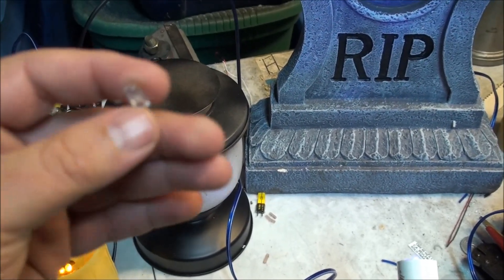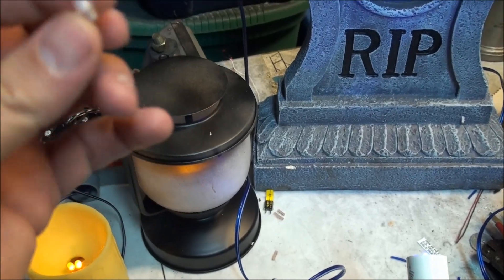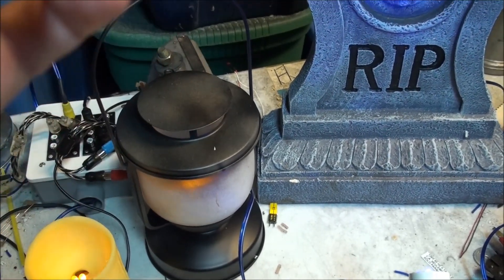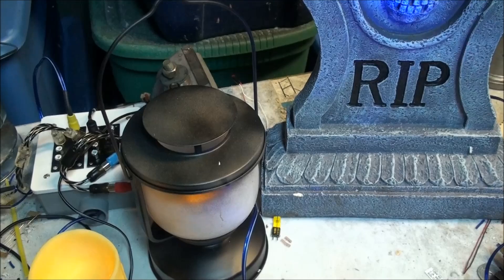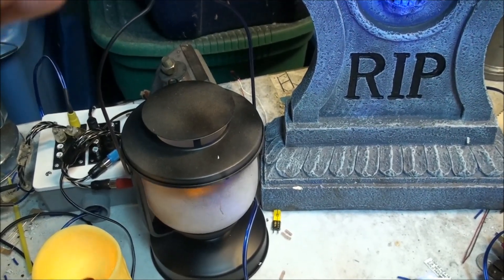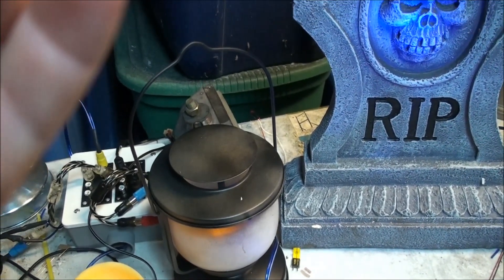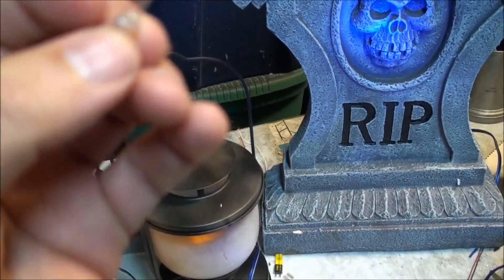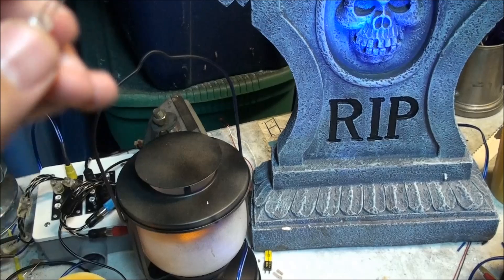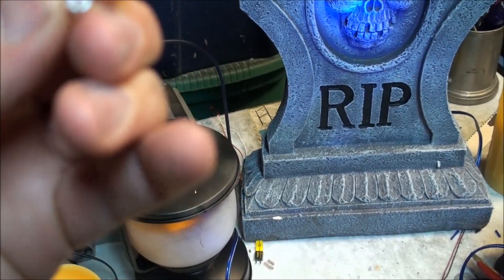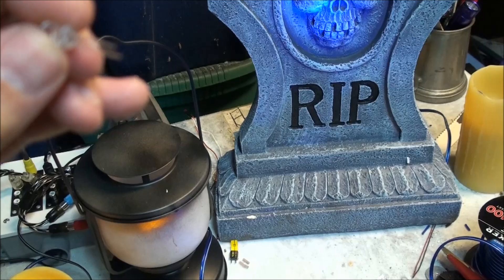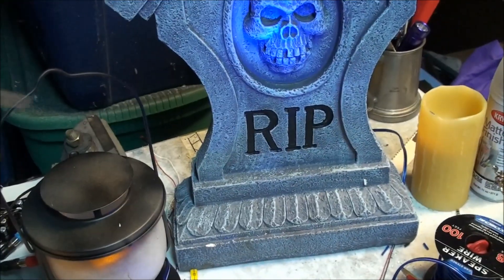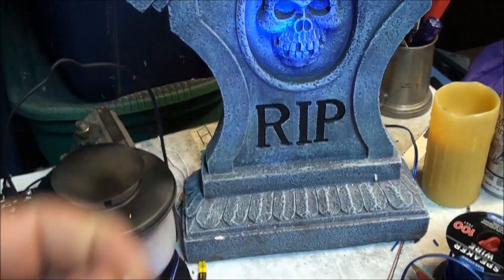And if, for any reason, the leads have already been cut and you can't tell which one was originally the longer lead, the other way you can tell is based on the fact that the LED will have a flat side. The LED will actually have a flat side and a rounded side near the leads. The flat side will be your negative and the rounded side will be the positive.